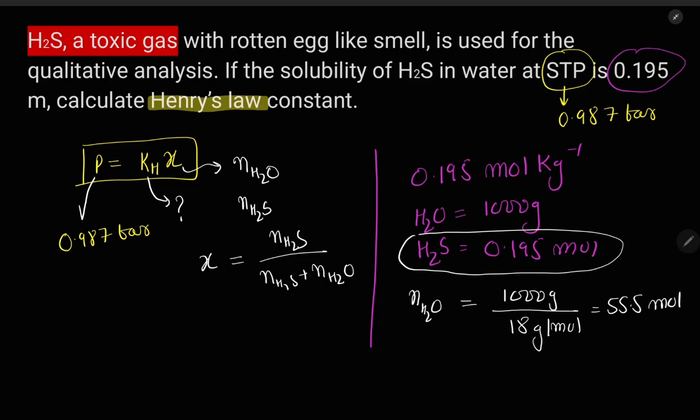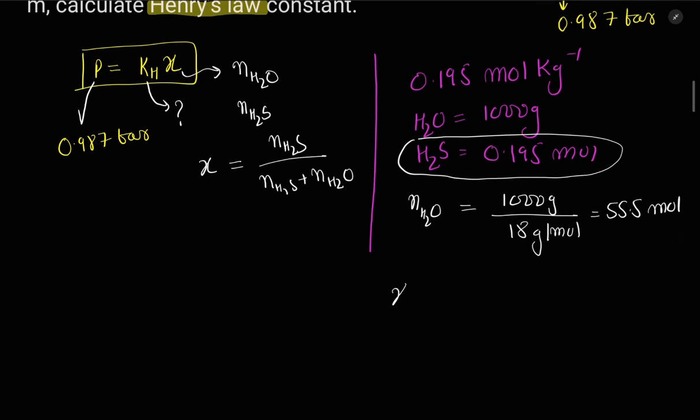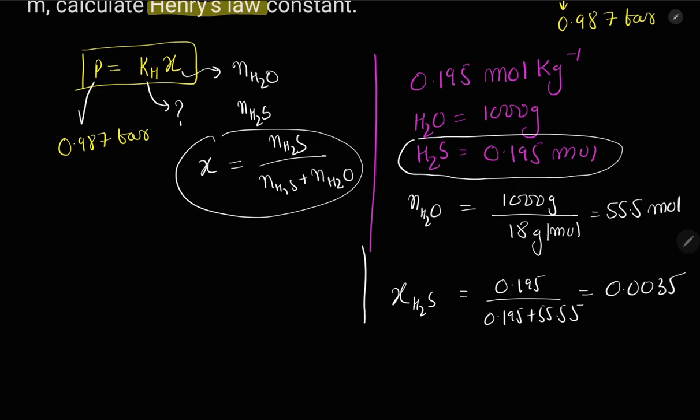We have moles of water and moles of H2S. So let's calculate the mole fraction of H2S, which as per the formula is number of moles of H2S, 0.195, divided by total number of moles, that is 0.195 plus 55.55. On solving, it will be approximately 0.0035.